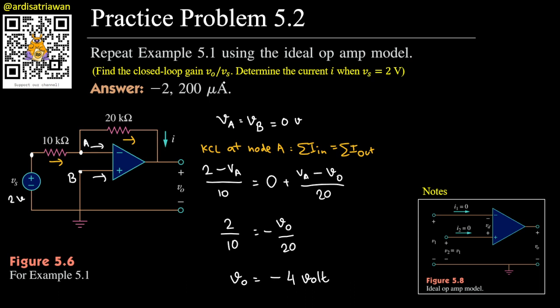But the question is asking about v0 over vs, so we can calculate that easily. v0 over vs, v0 is minus 4 and vs is 2, so we'll have the answer is minus 2. The unit will be volt over volt, or this is just a dimensionless unit, so you can omit it.